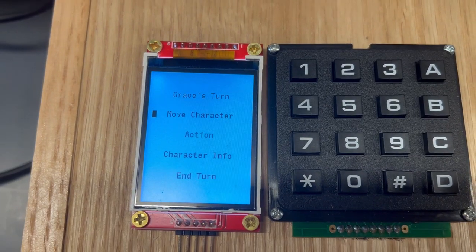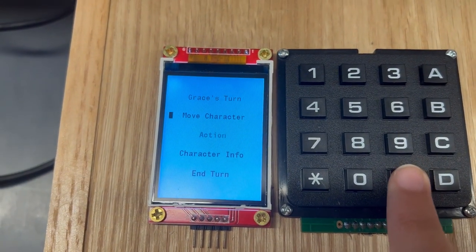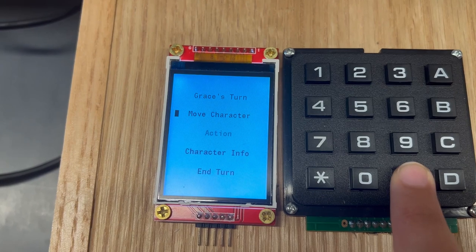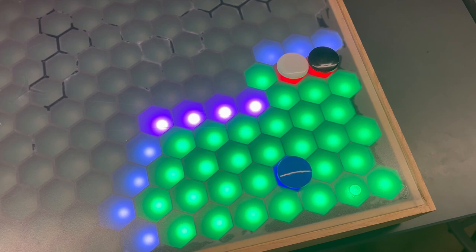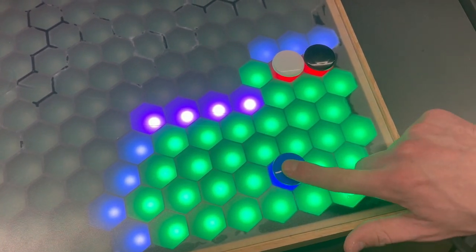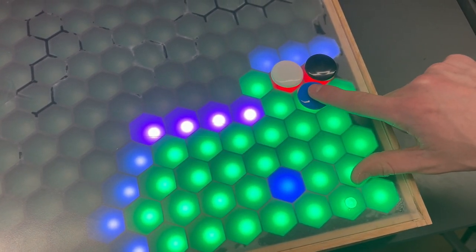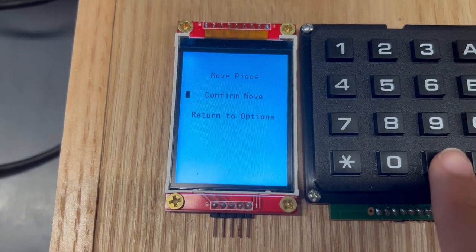It will resume back to Grace's turn. From here, she can choose to move her character, do an action, view stats, or end turn. We will select move. Her available moves are shown in green. We view the token, then confirm the move.